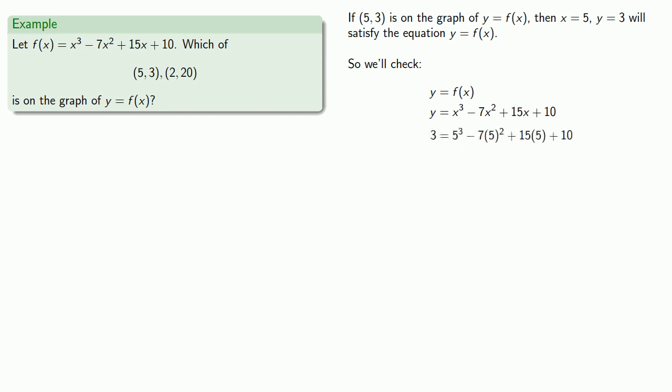Now we should be at least careful. We don't actually know that the point (5, 3) is on the graph, so we don't really know whether 3 is equal to this mess. So we'll put that question mark there and we'll do some calculations. And this statement, unless you're a politician, is false. And since this is false, (5, 3) is not on the graph of y = f(x).